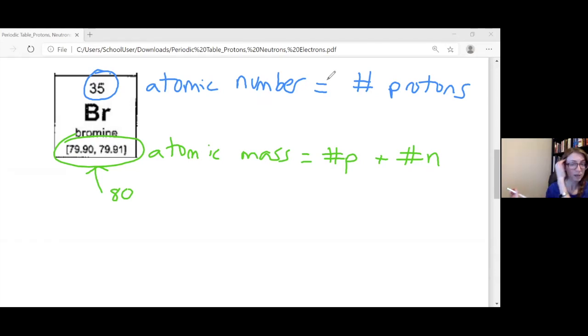So from this information, you could tell me right away bromine has 35 protons. That's from looking at the atomic number. We could figure out the neutrons by subtracting the two, right? The atomic mass of 80 minus the 35 protons. Since we know the mass is protons and neutrons, we subtract out those protons and we would be able to know how many neutrons bromine has, which would be 45.